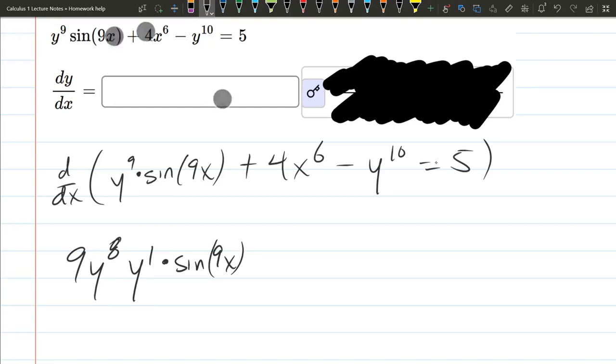Now the product rule is plus, just copy the y to the 9th, derivative of sine 9x. Derivative of sine is cosine of the original 9x times, that takes care of the sine, times derivative of 9x, which is 9.